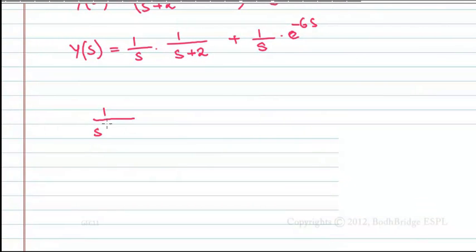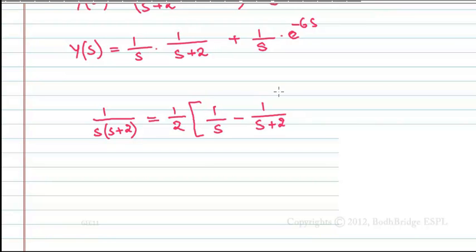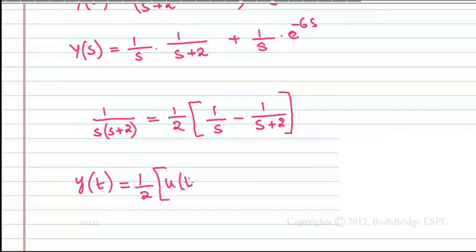Now, 1/[s(s+2)] can be expanded by partial fractions as (1/2)·[1/s - 1/(s+2)]. Let's verify: (s+2 - s) = 2, so we get 2/[s(s+2)], and the factor of 2 cancels. Therefore, the partial fraction expansion is correct.